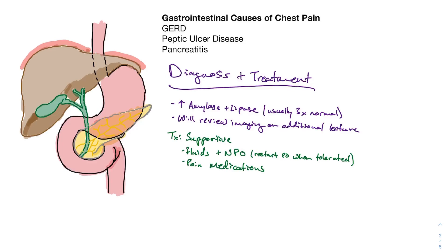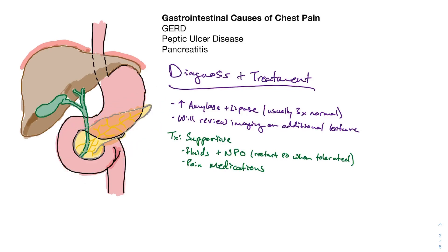Treatment for pancreatitis is generally supportive. We give IV fluids because patients are vomiting and losing volume. We make them NPO because anything by mouth stimulates the pancreas. Recent studies show that transitioning patients from NPO to eating sooner leads to better outcomes, so now we start clear liquids as soon as they're ready rather than waiting a fixed number of days. We also give pain medication because pancreatitis is very painful.